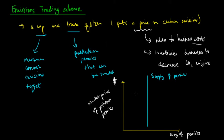The demand for permits is downward sloping. We're just going to note this as the demand for permits.